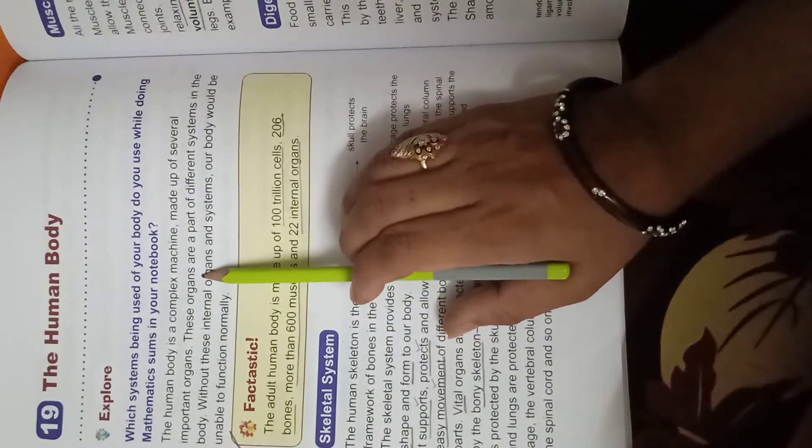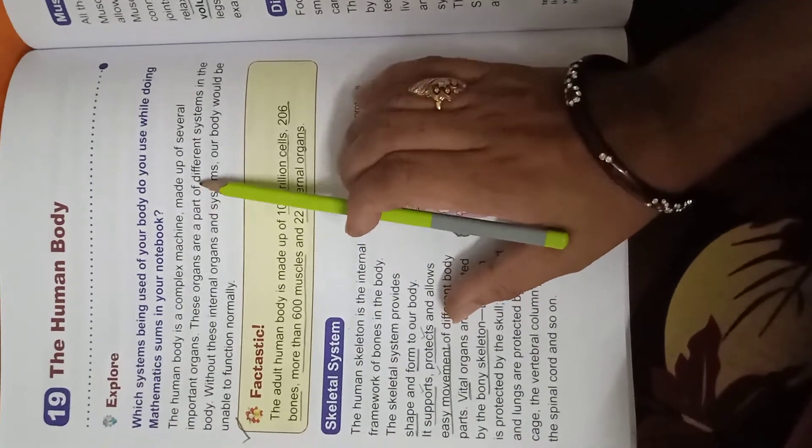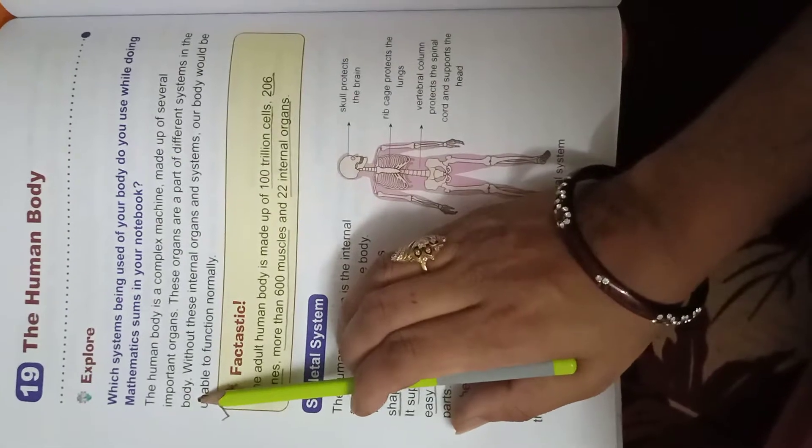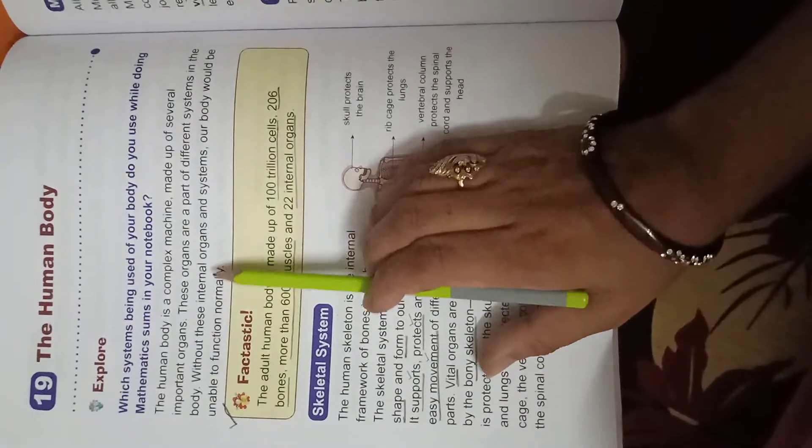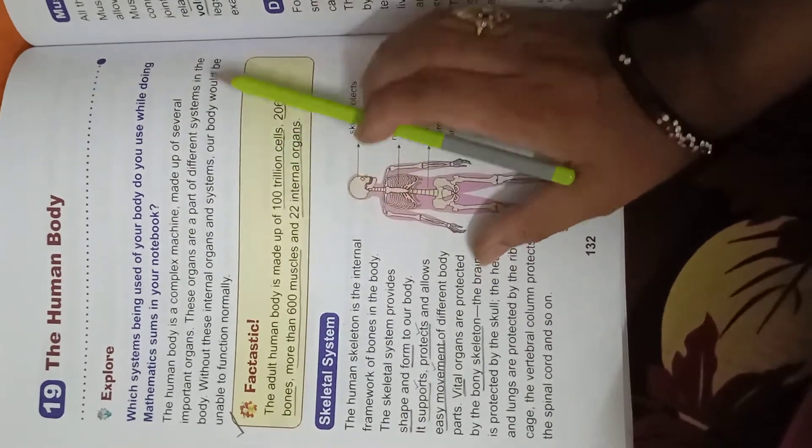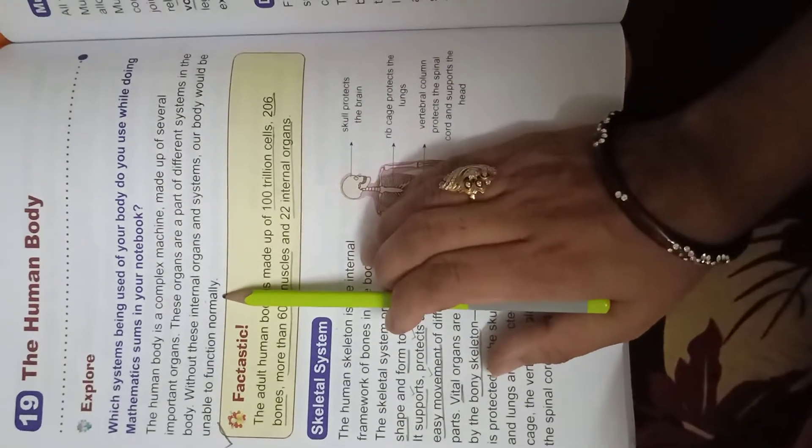These organs are a part of different systems in the body. Without these internal organs and systems, our body would be unable to function normally.